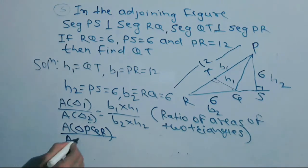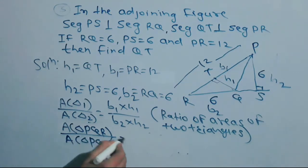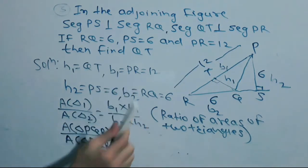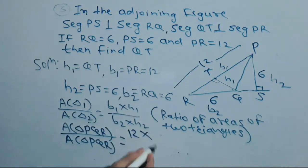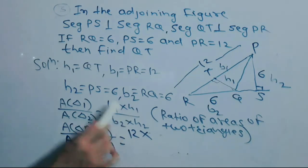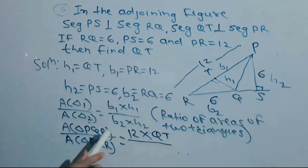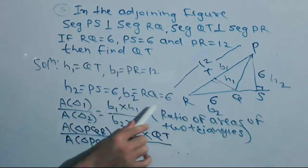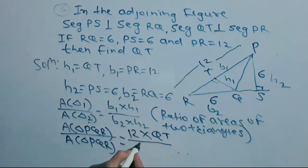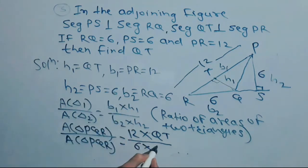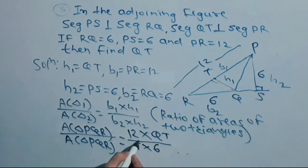Area of triangle PQR is equal to B1 value multiplied by H1 value — QT — upon B2 value 6, multiplied by H2 value 6.